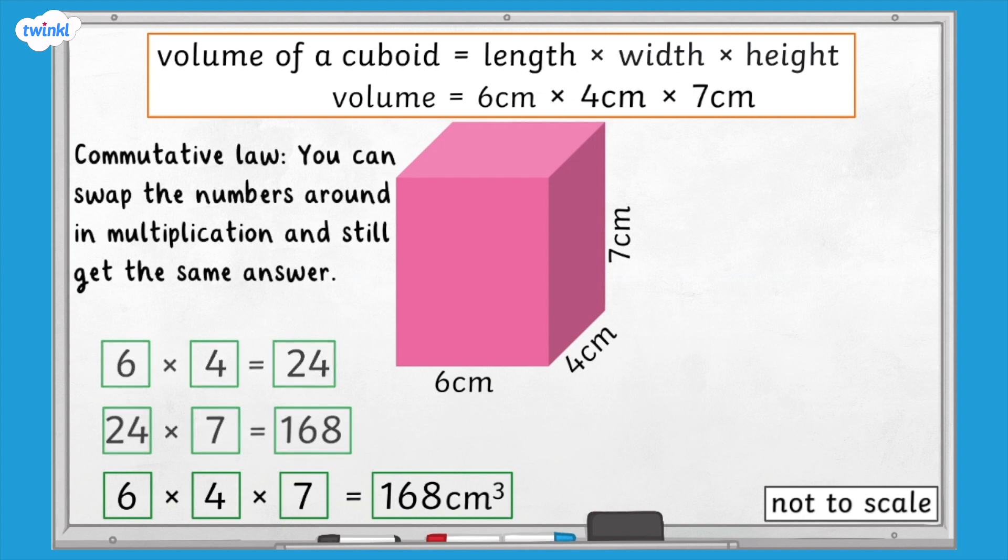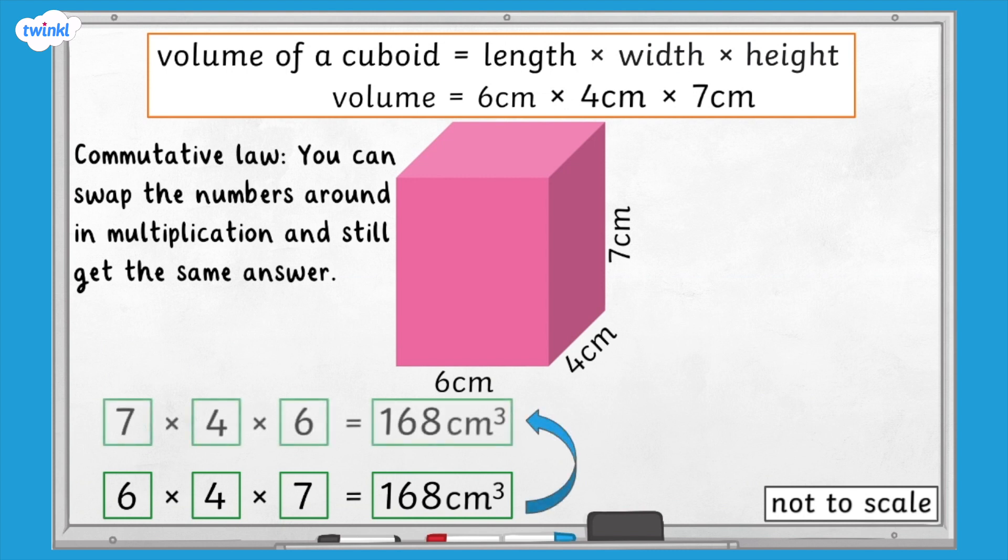Remember, because multiplication is commutative, it doesn't matter which order you multiply the three measurements together. For example, 7 multiplied by 4 multiplied by 6 still equals 168, even though we have multiplied the three measurements together in a different order.